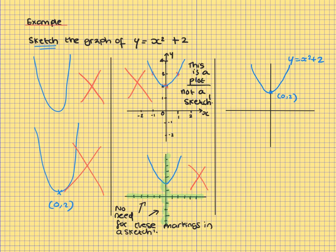So no plotted coordinates. There we have what I would consider a very decent sketch of y equals x squared plus 2. The coordinate axes are in place. The axes are labelled x and y. The graph is roughly sketched in position. We have not plotted coordinates. But the key point, which is this point here, 0, 2, the y-intercept, has been marked on.